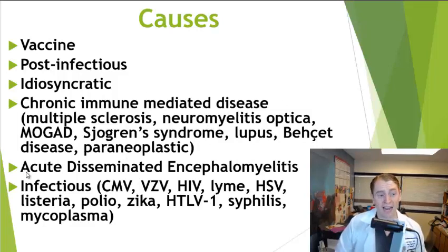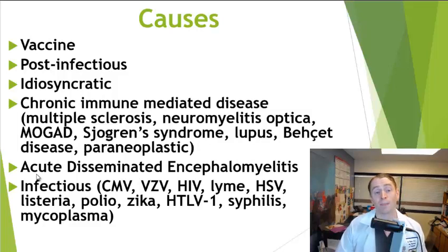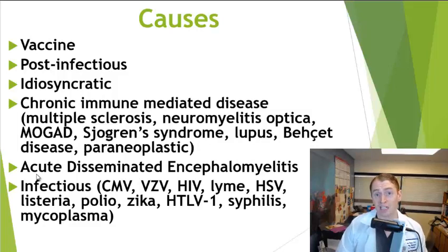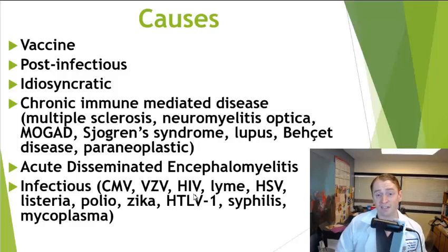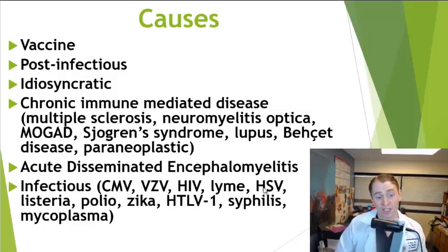There's a disease called ADEM, or Acute Disseminated Encephalomyelitis, where you get inflammation of the brain and spine spontaneously, more common in children. Sometimes transverse myelitis can be caused by an infection, with more rapid onset and severe symptoms. Common causes include cytomegalovirus, varicella zoster virus, HIV (which causes a vacuolar myelopathy with atrophy rather than a visible lesion), Lyme disease, herpes, or bacteria such as listeria.